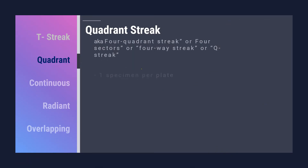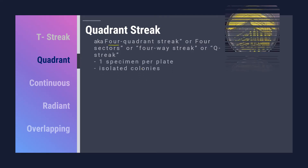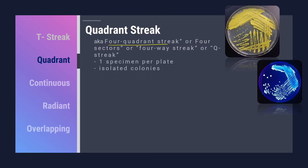Next is the quadrant streak, also known as the four quadrant streak, four sectors, four-way streak, or Q streak. Like the T-streak, only one specimen may be plated using this inoculating pattern. The Q streak is performed in the same manner as the T-streak, only this time having four separate equal-sized sections of the agar.